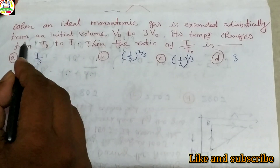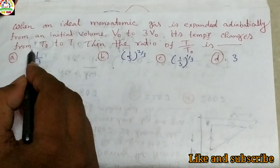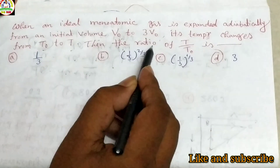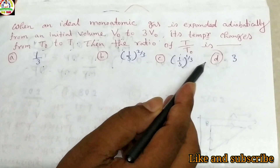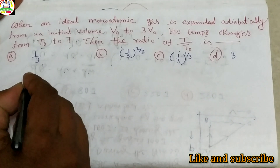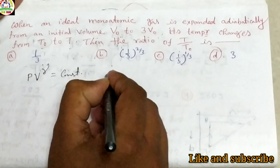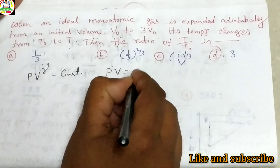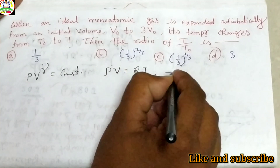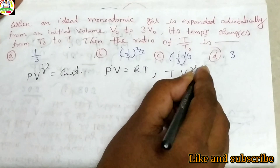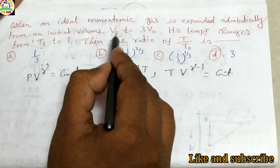Another important problem: when an ideal monatomic gas is expanded adiabatically from an initial volume V₀ to 3V₀, its temperature changes from T₀ to T. The ratio T/T₀ is: (a) 1/3, (b) (1/3)^(2/3), (c) 2/3, or (d) (1/3)^(1/3). For an adiabatic process, pV^γ = constant, and using pV = RT for one mole of ideal gas, we get TV^(γ−1) = constant.